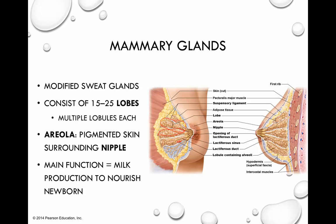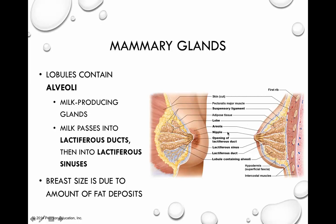Thinking about the gross structure of the mammary glands: externally, we note the areola — the pigmented area of skin surrounding the nipple. Looking internally, the nipple is a convergence of multiple lactiferous ducts that open at the exterior of the nipple. Each lobule contains multiple alveoli, and these alveoli are milk-producing glands. Once triggered to produce and secrete milk, the milk travels down a lactiferous duct into lactiferous sinuses, then enters the openings of the lactiferous ducts and exits through the nipple.